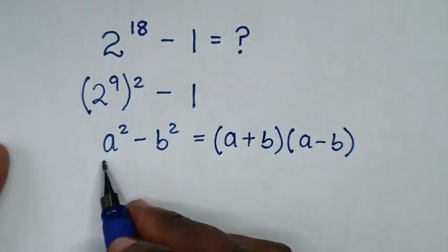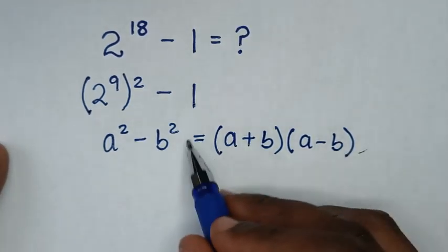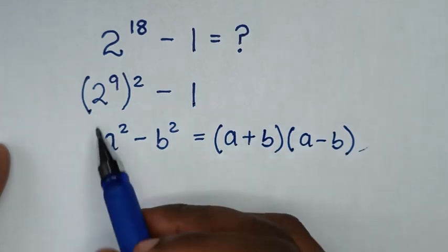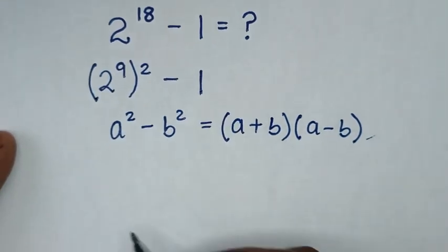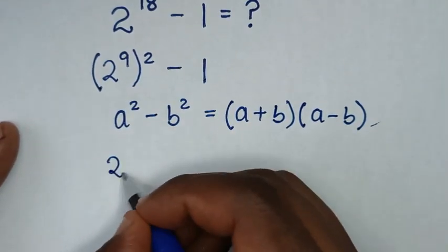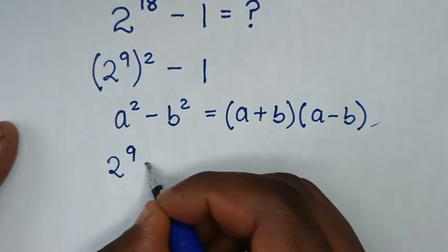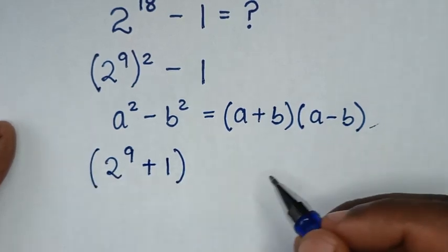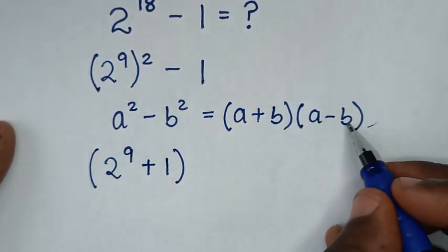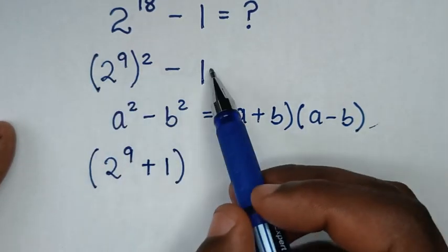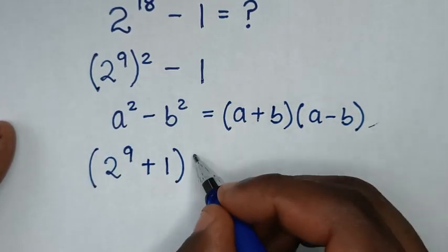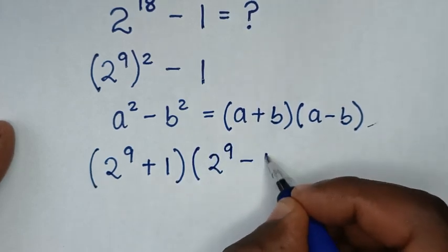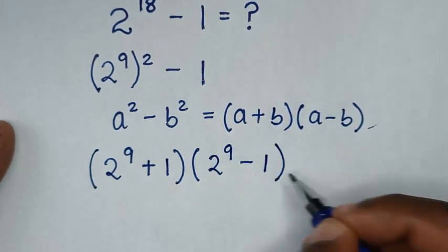From this rule we'll apply this form here. So a plus b it will be 2 power of 9 plus 1, bracket, then times a minus b it will be 2 power of 9 minus 1, bracket.